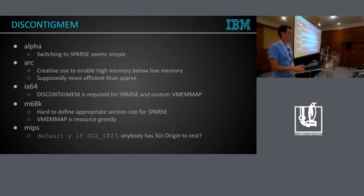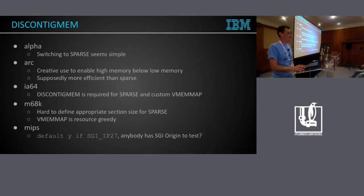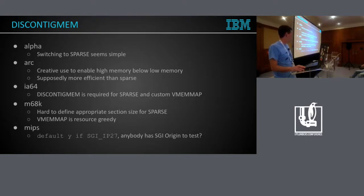For m68k it's quite the opposite of alpha — the list is really responsive and I even get feedback like 'I've tested your patches on my Amiga real hardware but it doesn't work.' The problem with m68k is that it's not difficult to implement sparse, but I don't have enough definitions of the existing hardware to understand what the section size must be. If the section is too large, I get huge holes in the memory map; if too small, I don't have enough space in the page flags. So we are working on it.